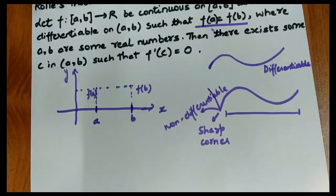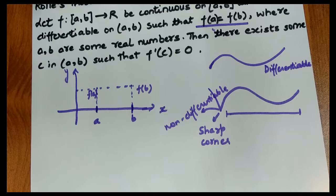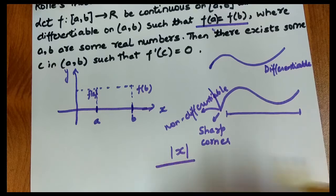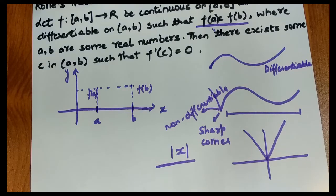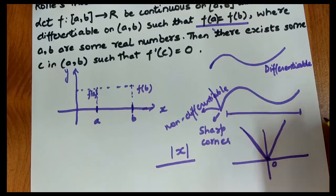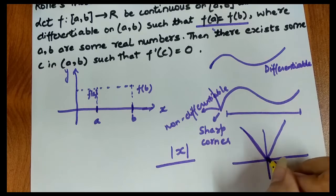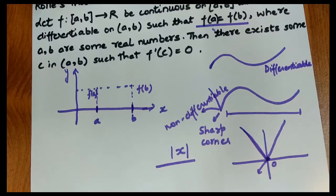As we discussed in previous videos when solving NCERT questions, we checked whether the modulus function |x| is differentiable. From the graph of |x|, we proved that modulus x is differentiable at each point except at x = 0, because there is a sharp corner at that point, making it non-differentiable there.